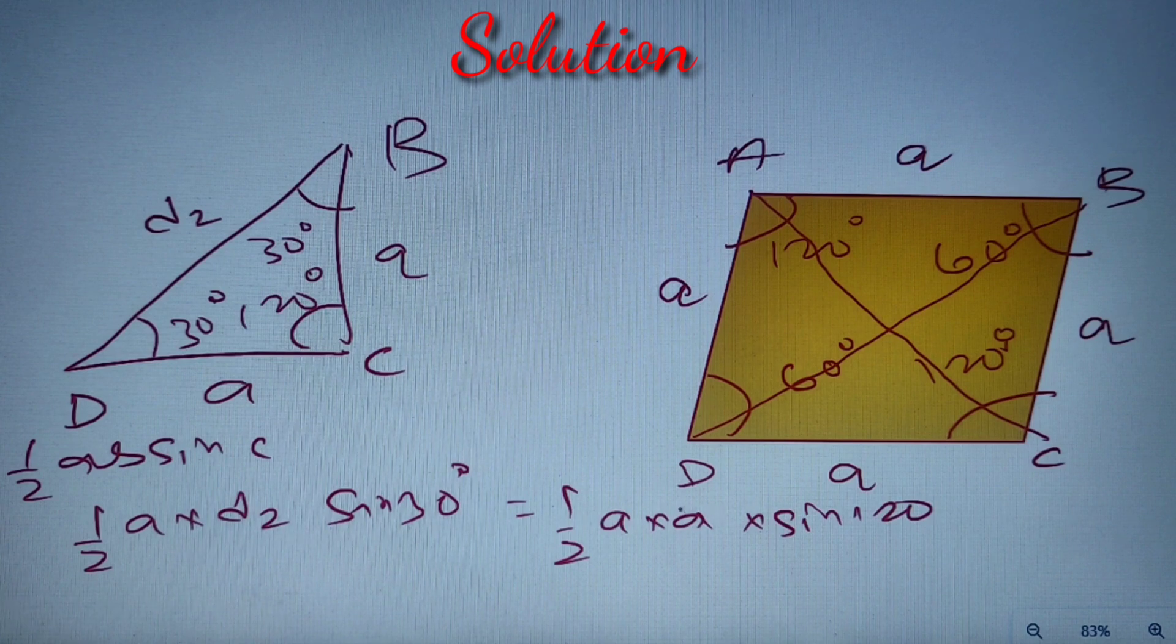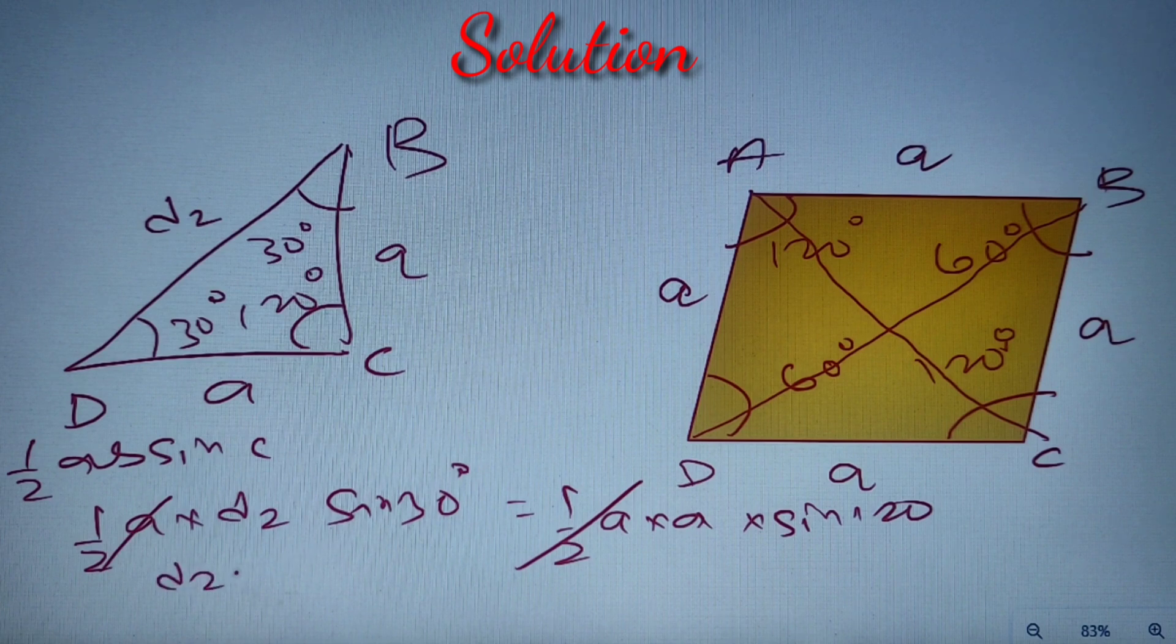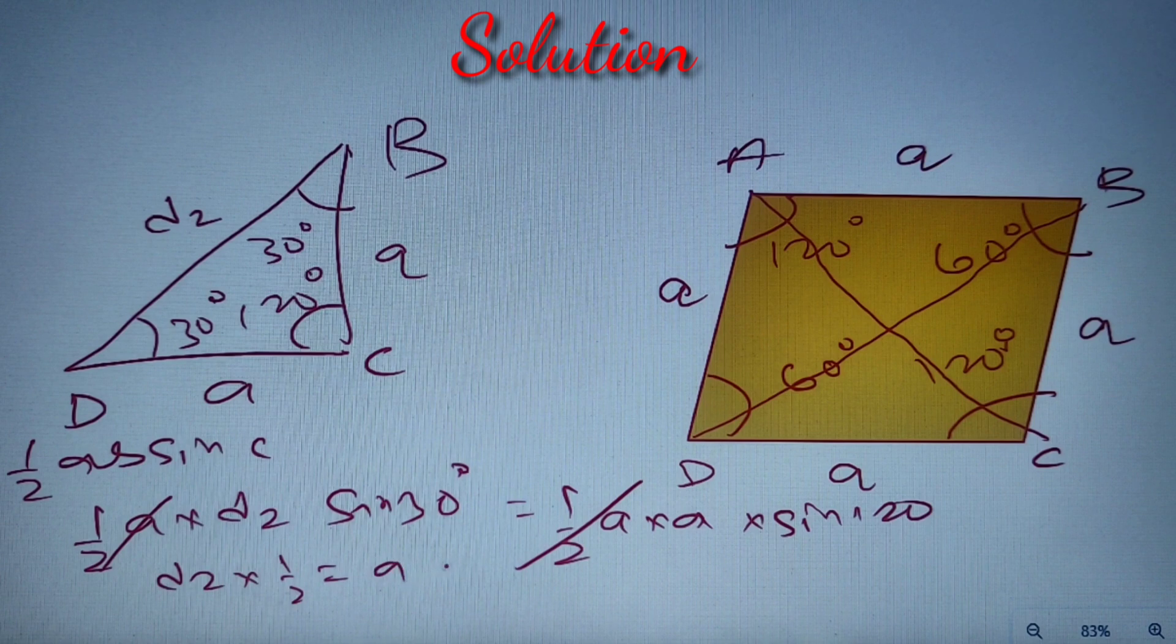From here we'll get D2 in terms of a. So this half a and this half a will get cancelled. We know that D2 into sine 30 degrees is equal to D2 into half, and a into sine 120 degrees is equal to a into root 3 by 2. So this 2 and this 2 will get cancelled and we have got D2 is equal to root 3 a.